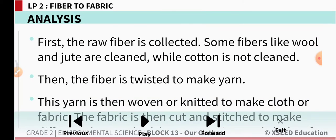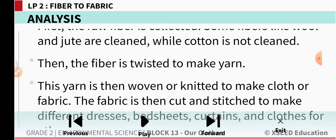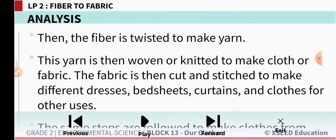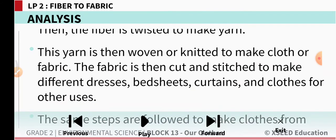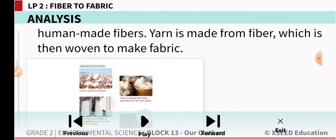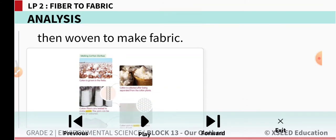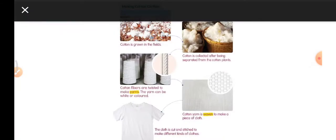How do we get different clothes from fibers? First, the raw fiber is collected. Some fibers like wool and jute are cleaned, while cotton is not. Then the fiber is twisted to make yarn, which is then woven or knitted to make cloth. The fabric is cut and stitched to make dresses, bed sheets, curtains, and other items. The same steps apply to human-made fibers.